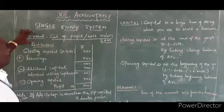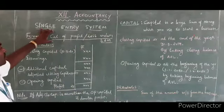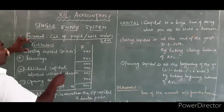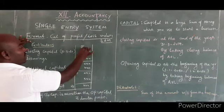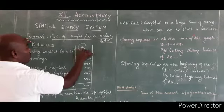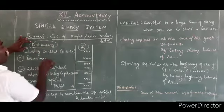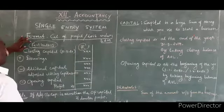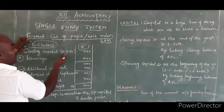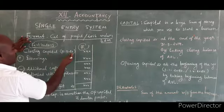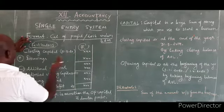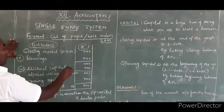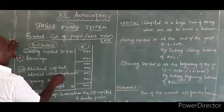The format for calculation of profit or loss under the Statement of Affairs method: open two columns — one is 'Particulars' and the other is 'Rupees'. Start with closing capital, then add drawings, then less additional capital — the answer will be adjusted closing capital. Then less opening capital — the answer will be profit.